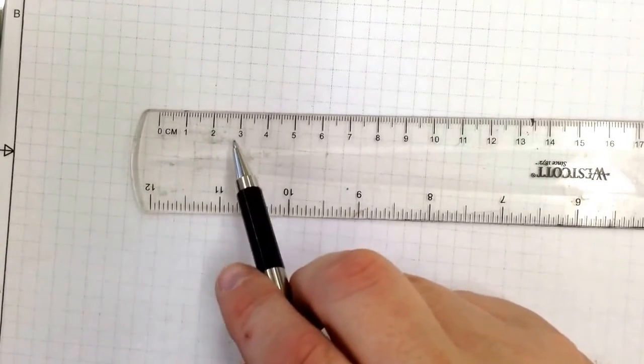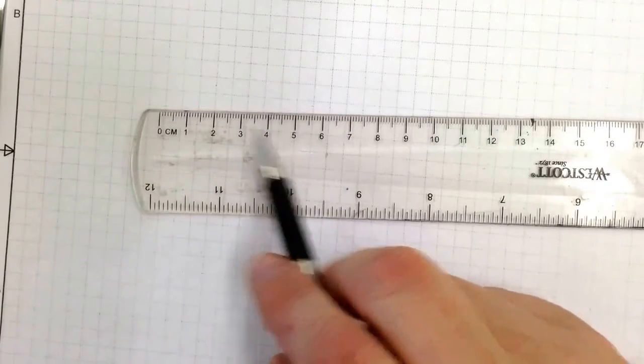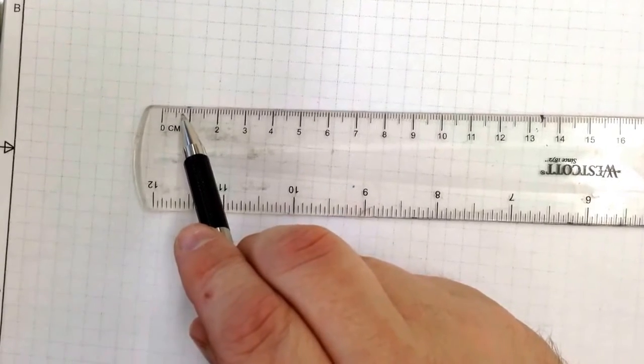And this ruler right here is broken down into centimeters. And the little increments right there are millimeters.